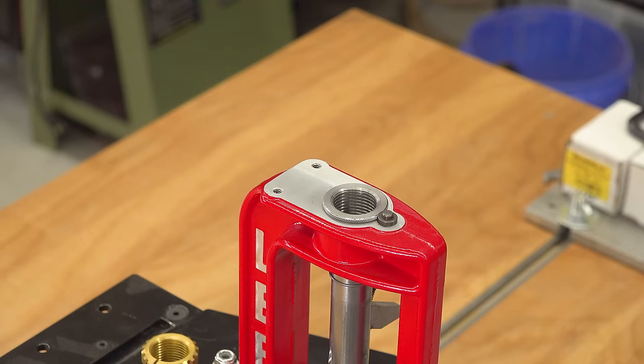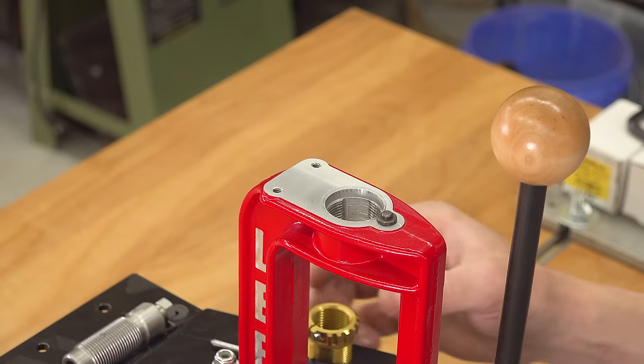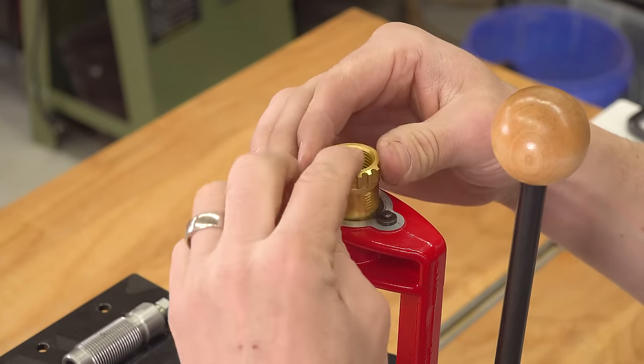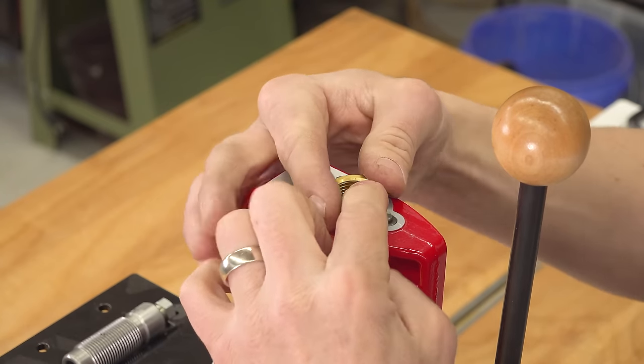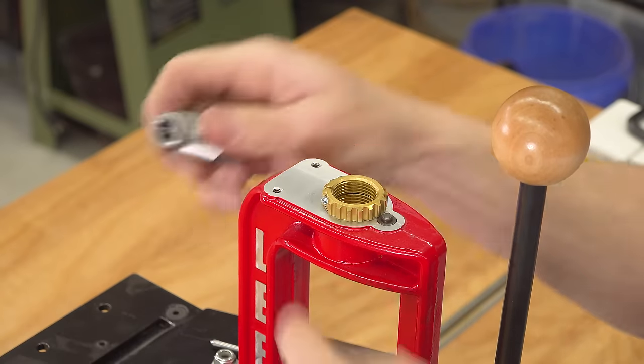Next, let's look at the lock ring eliminator. So I've removed the breech lock bushing from the press because the lock ring eliminator is going to take its place. So we're just going to push that down in and then rotate it while pushing down on the button until it stops rotating.